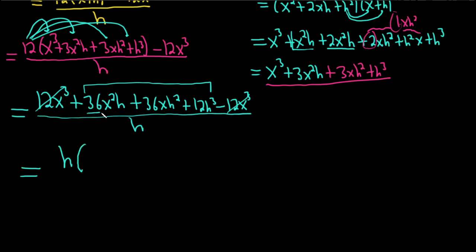So 36x squared plus, and then we're pulling out an h from this middle term. So we'll have one left. It'll be 36xh. And then plus, pulling out an h from this last term. It has an h cubed. So we're left with 12h squared. And that's all being divided by h.